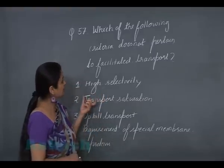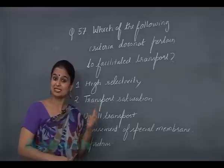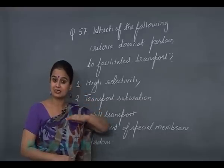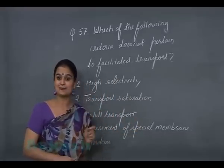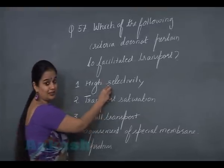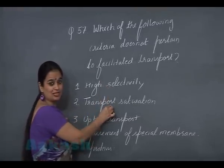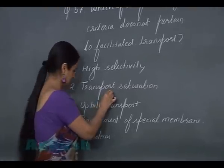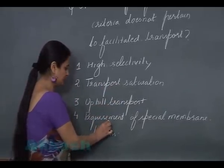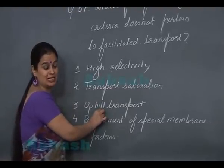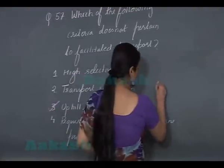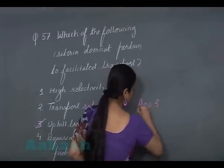Facilitated diffusion is a downhill movement, where transport of substances occurs from high concentration to low concentration. Looking at the options: selective in nature is correct, transport saturation is correct, special membrane carrier proteins are required — correct. The uphill movement option is not associated with facilitated diffusion, so the right answer is option 3.